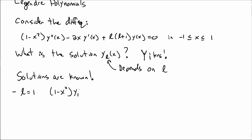So our differential equation becomes 1 minus x squared, y sub 1 double prime, minus 2xy1 prime, plus 2y1 equal to 0.